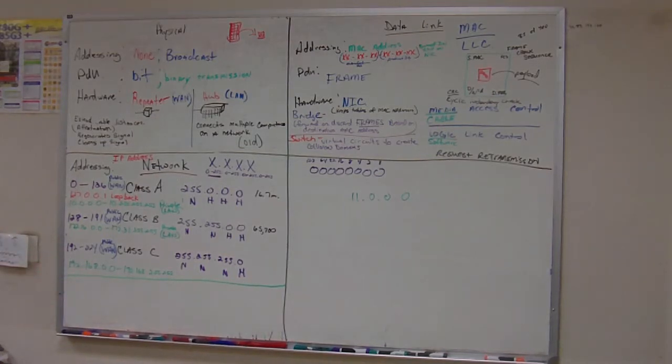We are saying, remember, we're breaking it down with what's the addressing, what is the hardware that functions at this layer, and what does data look like at this layer. And we can knock these two out pretty quick. The biggest part of the network layer is understanding the IP addressing.